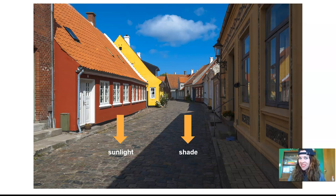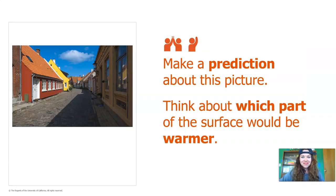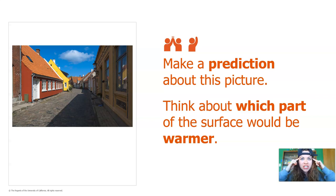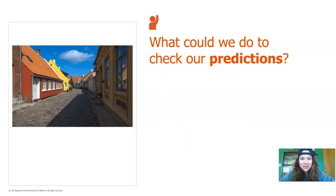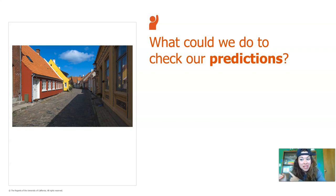Have you ever heard of shade before? I want you to make a prediction about that picture. Think about which part of the street would be warmer, and which part would feel cooler. Go ahead and make your prediction now. What could we do to check our predictions? We could go to this place, but that's not possible right now — we're all supposed to stay in our houses to be safe. Is there a different way we could check the temperature difference in the two spots?